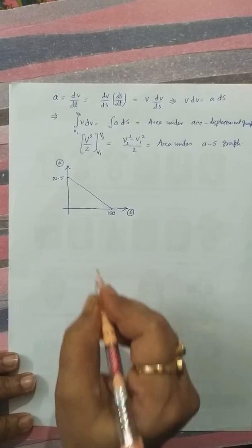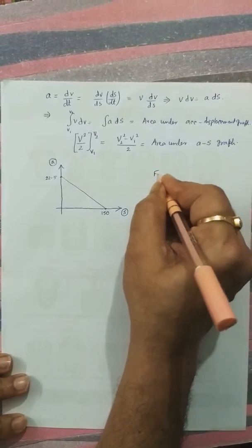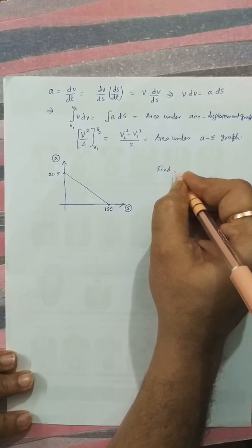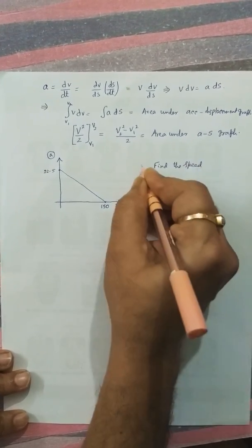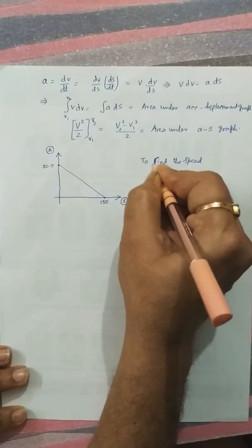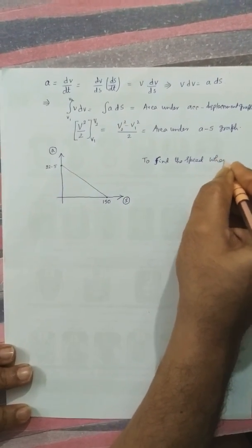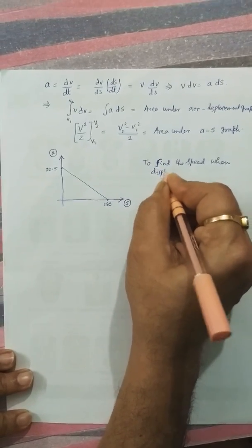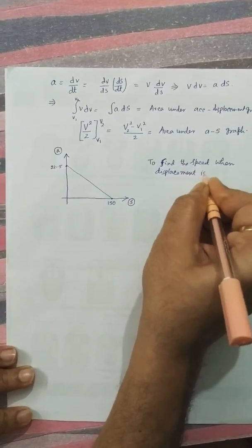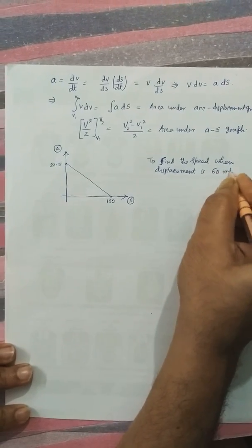Then we have to find out, suppose we take question that find the speed, that is to find the speed when displacement is 60 meters.